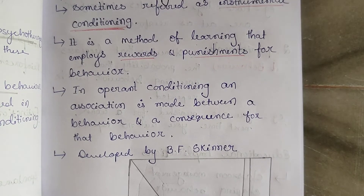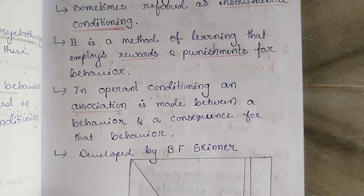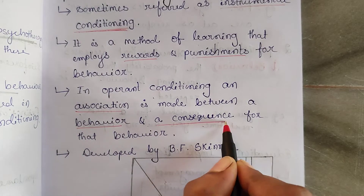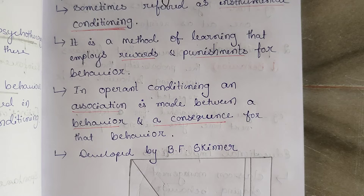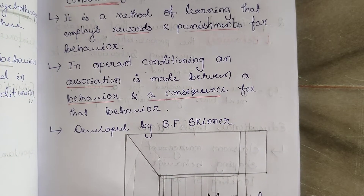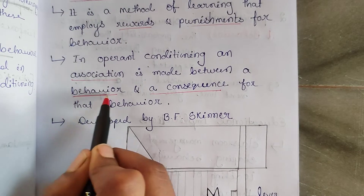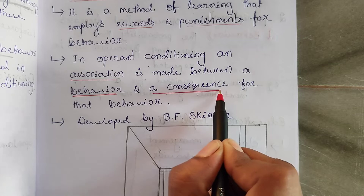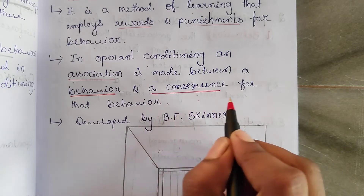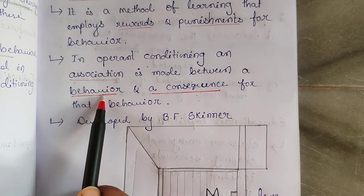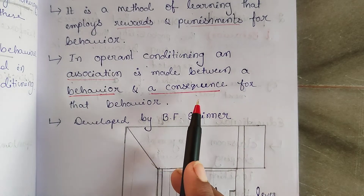In operant conditioning, an association is made between behavior and its consequences. Consequence means the result of your behavior. If there is a problem, how you behave determines the consequence. Consequences can be positive or negative. For example, if you studied well and got good marks, that is a positive consequence.